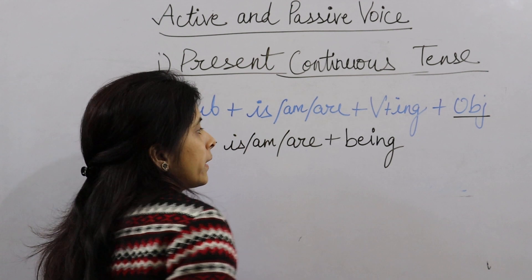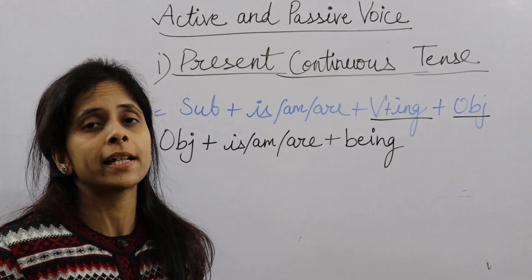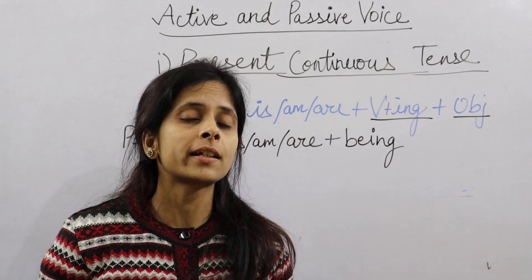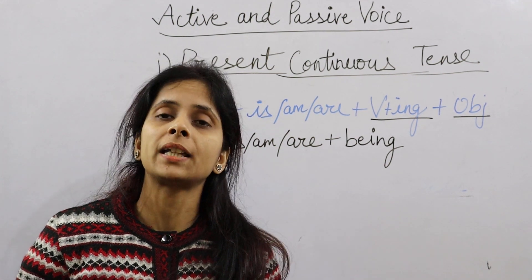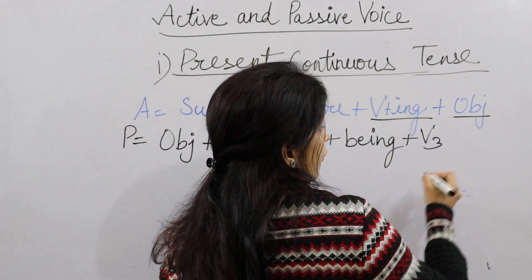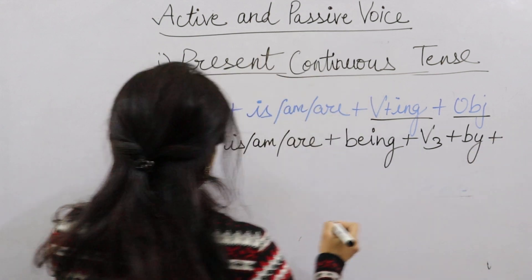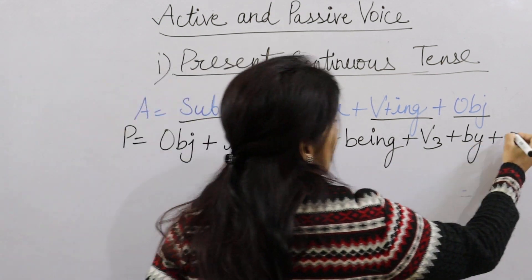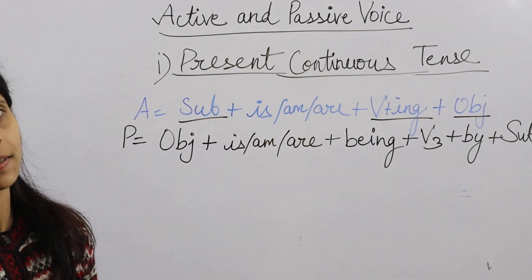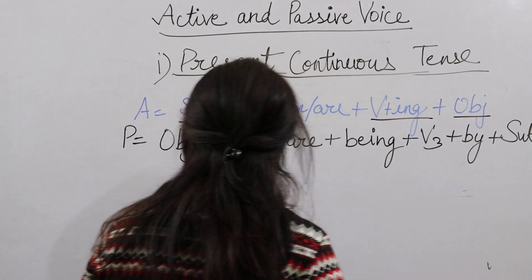Is/Am/Are के साथ 'being' आता है। Verb की साथ जो Ing लगा हुआ था, passive में वो Verb की 3rd form हो जाती है। फिर 'by' आता है, और starting का Subject सबसे last में आ जाता है। यह होता है Present Continuous Tense का Passive Voice बनाने का formula। अब एक example देती हूँ।